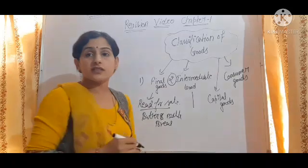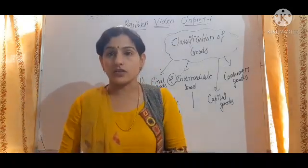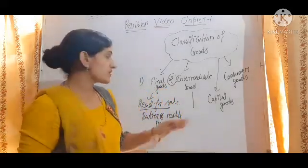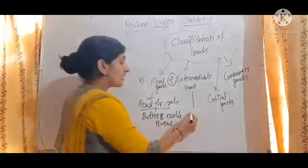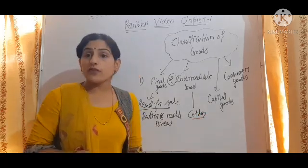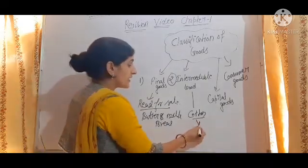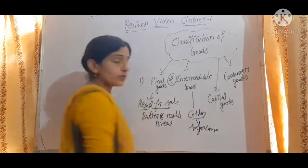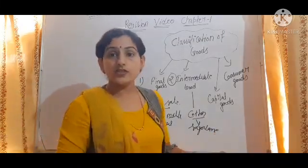Then we talk about intermediate goods. Intermediate goods are those goods which are in the process of production — they are not yet ready. For example, cotton used in manufacturing cloth is an intermediate good. Similarly, sugar cane used to make sugar is also an intermediate good.